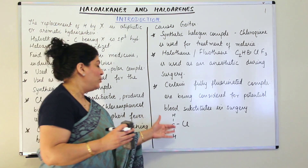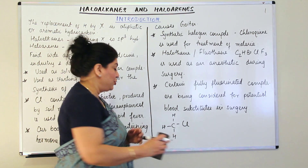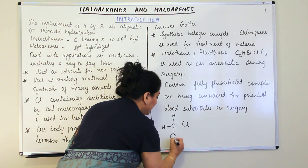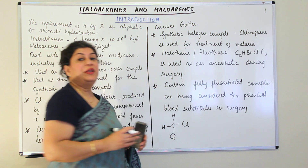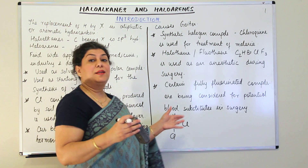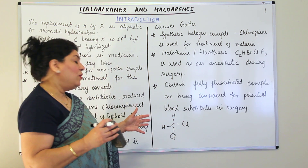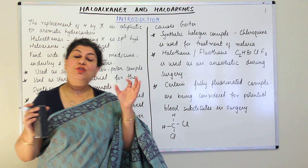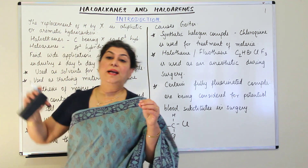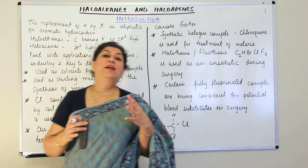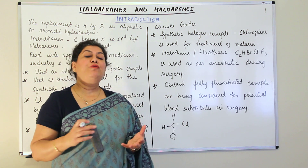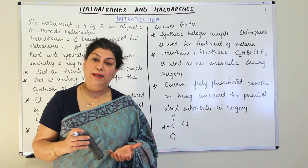You can have more substitutions. If you had two chlorines, you would have dichloromethane; three chlorines would be trichloromethane, and so on. We will understand that later. For now, we just need to know that any alkane in which a hydrogen has been substituted by a halogen forms a haloalkane.